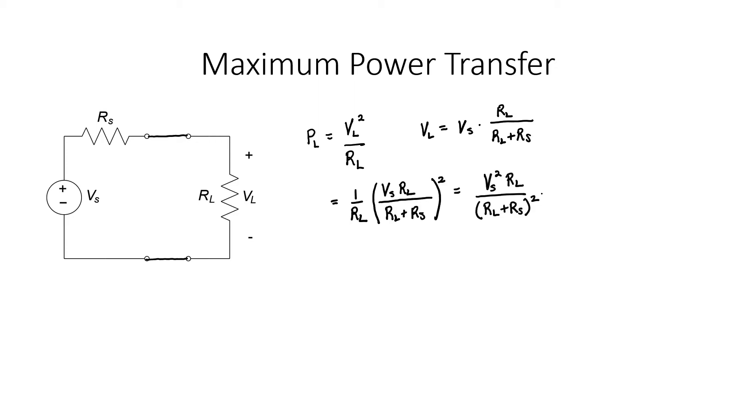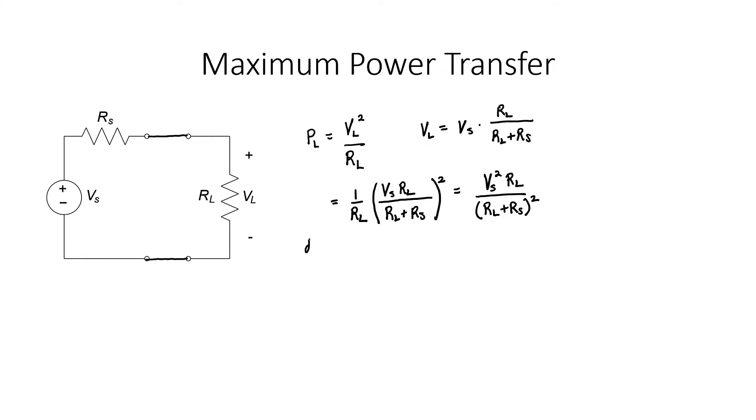What I'd like to do now is the following. I want to find the maximum power as a function of the load resistance. In order to maximize something, we need to take the derivative and set it equal to zero. So let's take the derivative of this equation with respect to the load resistance R sub L.